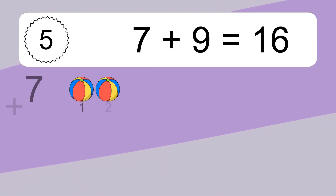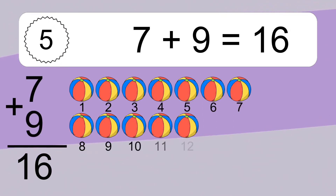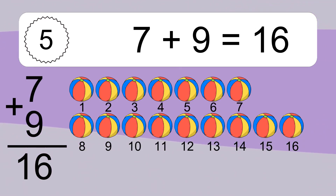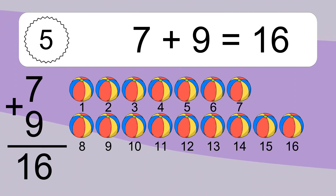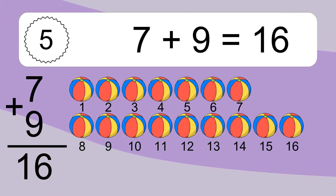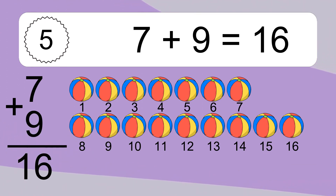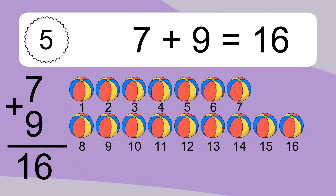7 plus 9 equals 16. Let's count it. 1, 2, 3, 4, 5, 6, 7, 8, 9, 10, 11, 12, 13, 14, 15, 16.